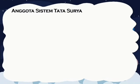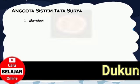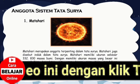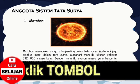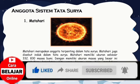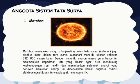Anggota Sistem Tata Surya. 1. Matahari. Matahari merupakan anggota terpenting dalam Tata Surya. Matahari juga disebut induk dalam Tata Surya. Matahari memiliki ukuran sebesar 332.830 massa bumi. Dengan memiliki ukuran massa yang besar ini, menimbulkan kepadatan inti yang besar agar bisa mendukung kesinambungan fusi nuklir dan menimbulkan sejumlah energi yang dahsyat. Kemudian energi ini dipancarkan ke luar angkasa sebagai radiasi elektromagnetik, termasuk spektrum magnetik.